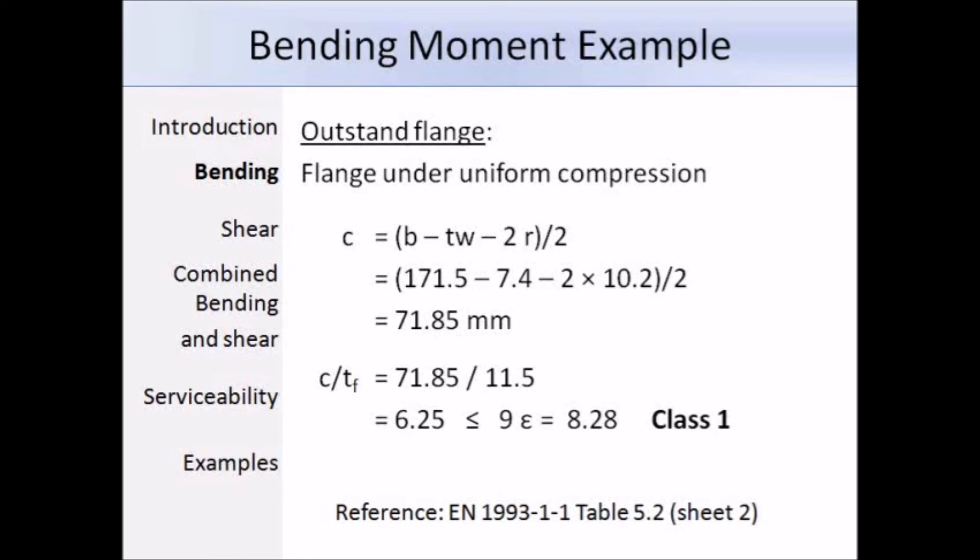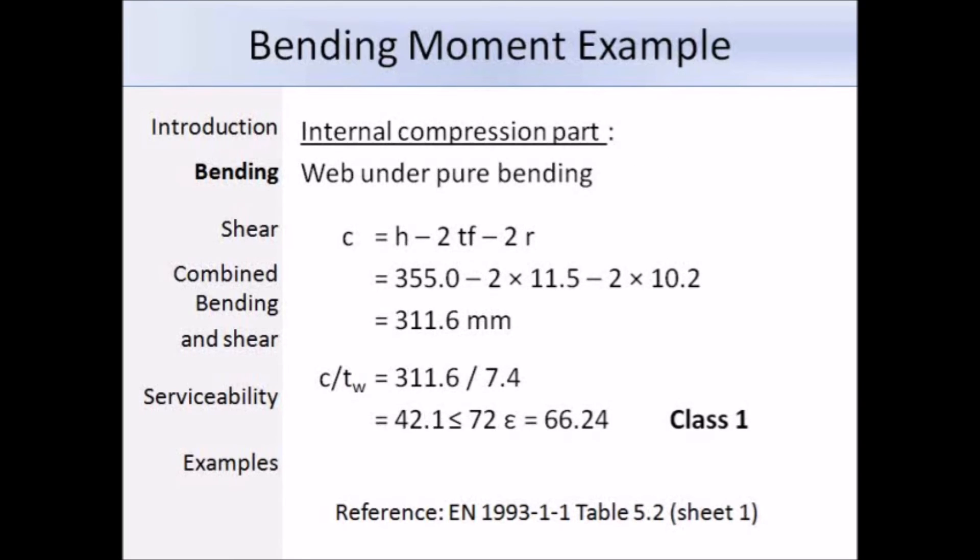Now we need to do the same for the internal compression part, i.e. the web. In this case, c equals h minus 2TF minus 2r. That's the same as you would have used in BS 5950 except that the terminology is slightly different. So c works out as 311.6. We divide that by the web thickness TW which is 7.4, and we get 42.1. The class 1 limit for the internal compression parts is 72ε, and that's equal to 66.24. Therefore the web is also class 1.